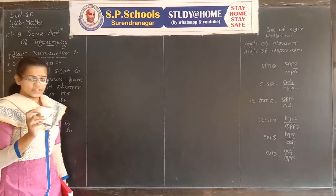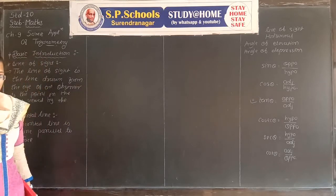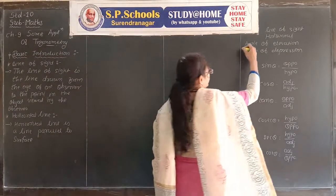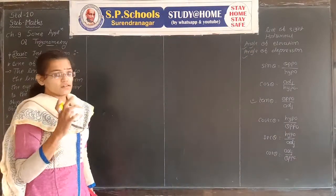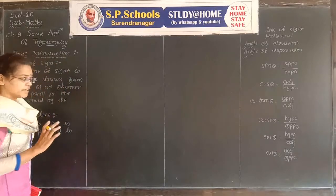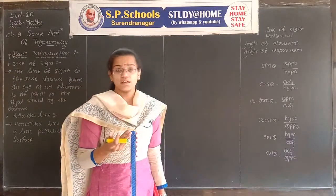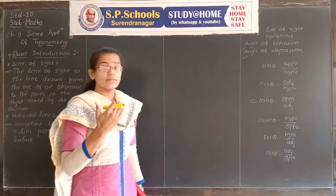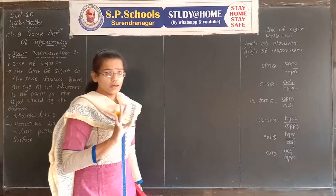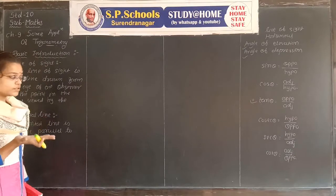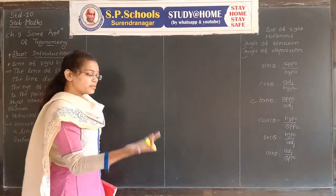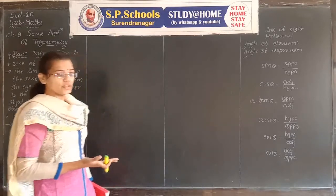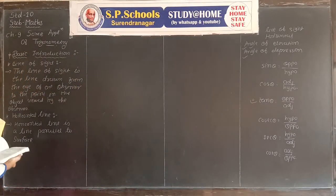There are two words: line of sight and horizontal. Now, the angle of elevation and angle of depression are two angles — the angle between the line of sight and the horizontal. The position of the object differs: sometimes it is below the horizontal and sometimes it is above the horizontal. Now we discuss the definition of angle of elevation.